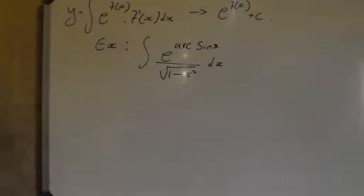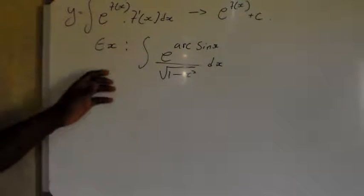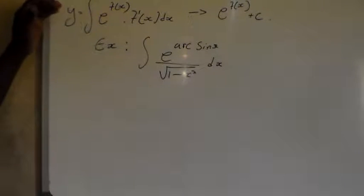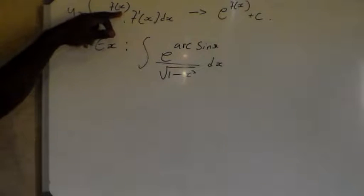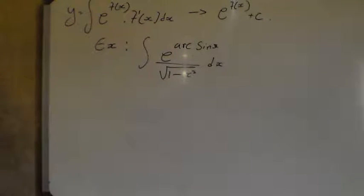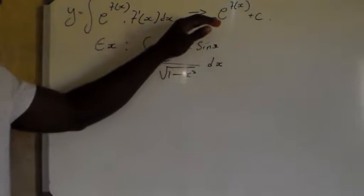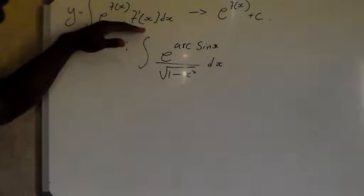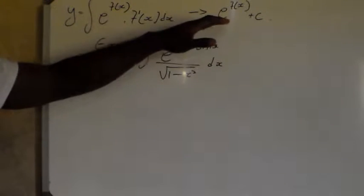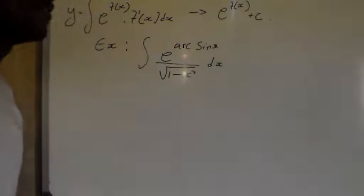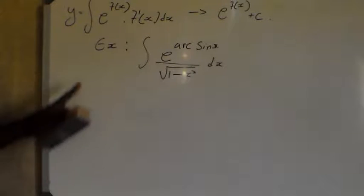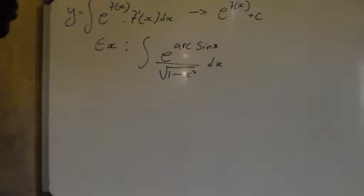Okay guys, let's look at our third type. So here is our third type which is f of x. They say integrate e to the power f of x multiplied by the derivative of f of x. This type of integral is equal to e to the power f of x plus C. So this one is not there in your formula sheet.